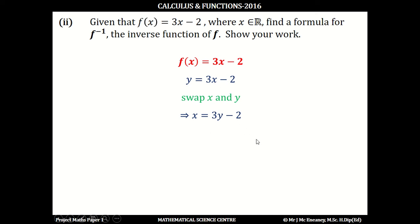If you bring the minus 2 over, you get x plus 2 equals 3y. And then if you want to get y on its own, y is going to equal x plus 2 all over 3. So that's your inverse function. f inverse would be x plus 2 all over 3.